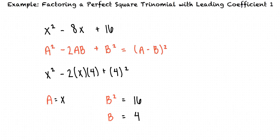Since a equals x and b equals 4, we can use our formula to write our perfect square trinomial in factored form as the quantity x minus 4 squared.